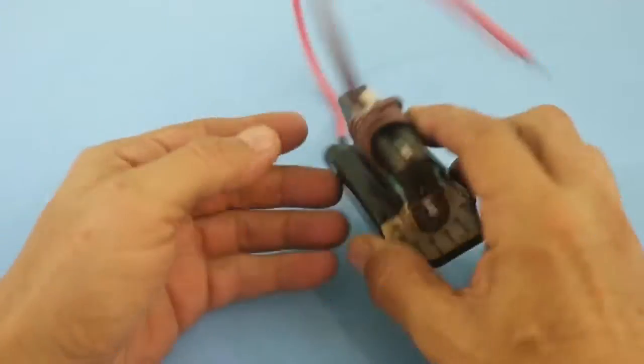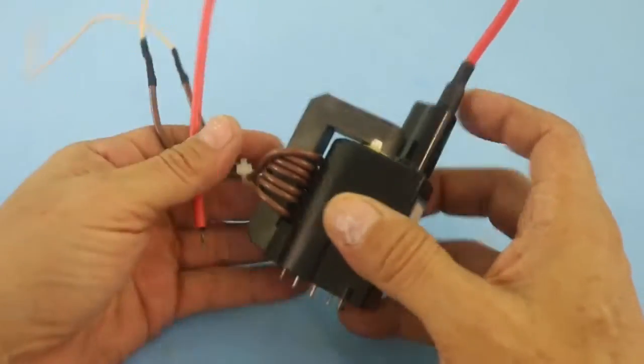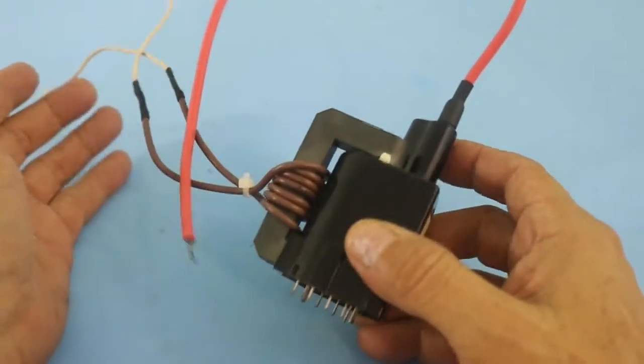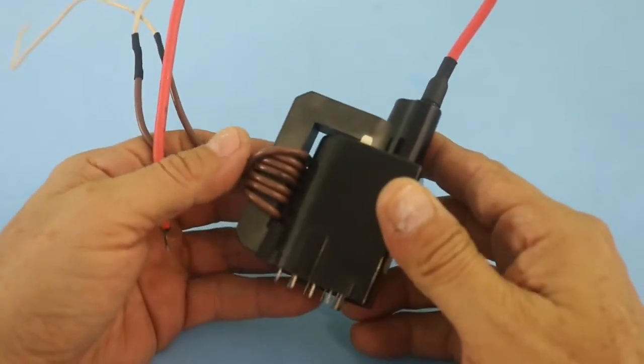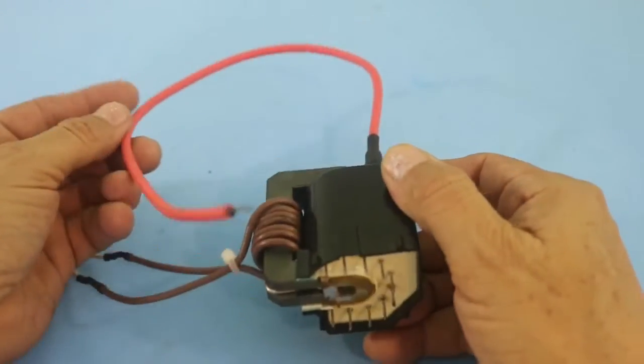This component was widely used in the old TV sets, the big TVs with the cathode ray tube, because this tube needs this kind of very high voltages that this component can produce.